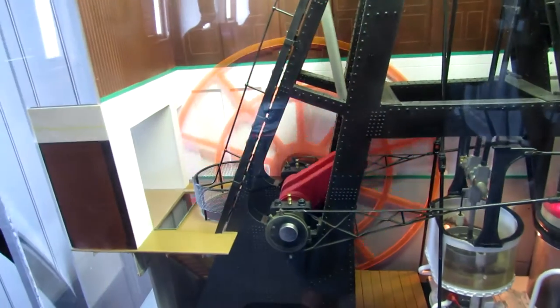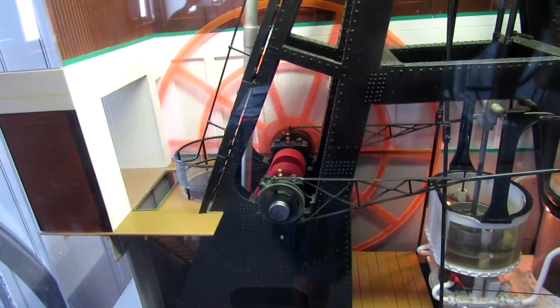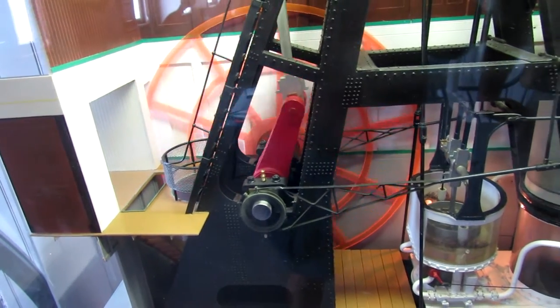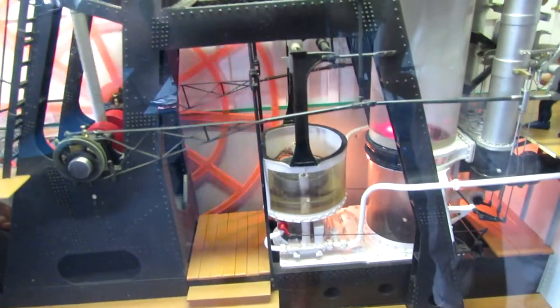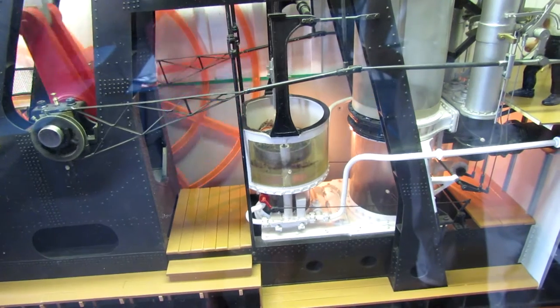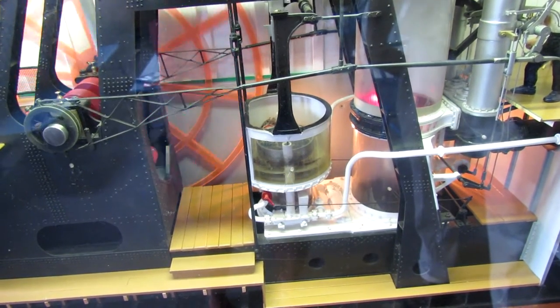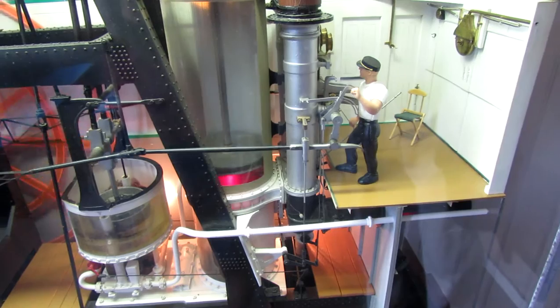As we talk about the major components of the engine, a flashing light will come on to show which part is being described. The power for the Ticonderoga engine comes from heating water to the boiling point in two coal-fired boilers.